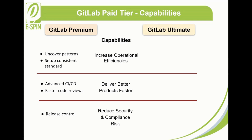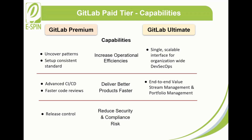GitLab Ultimate improves operational efficiencies through a single, scalable interface for organization-wide DevSecOps that helps reduce handoffs across tools and teams. It eliminates bottlenecks and delivers products faster through end-to-end value stream management and portfolio management, providing greater visibility and transparency across projects. GitLab Ultimate also helps manage security risk and achieve regulatory compliance through built-in security testing, compliance, and preventive security for cloud-native applications.